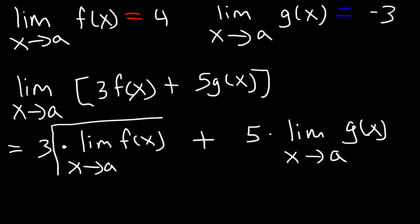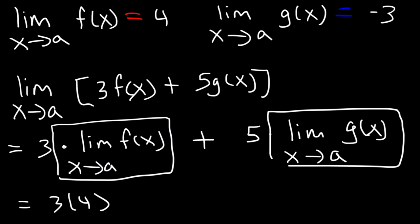So, we know this is equal to 4. So, what we have is 3 times 4. And this portion here is equal to negative 3. So, that's plus 5 times negative 3. 3 times 4 is 12, 5 times negative 3 is negative 15, and 12 minus 15 is negative 3.